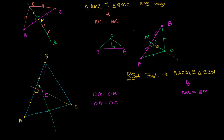Now this is interesting. OA is equal to OB, and OA is also equal to OC. So OC and OB have to be the same thing as well — OC must be equal to OB. If a point is equidistant from two other points that sit on either end of a segment, then that point must sit on the perpendicular bisector of that segment. That's the second proof we did. So O must sit on the perpendicular bisector of BC.